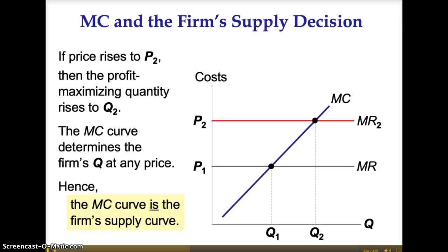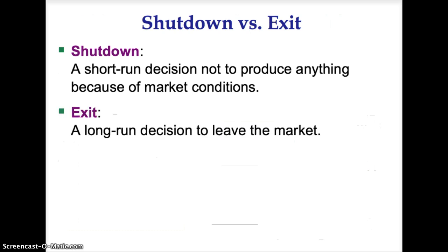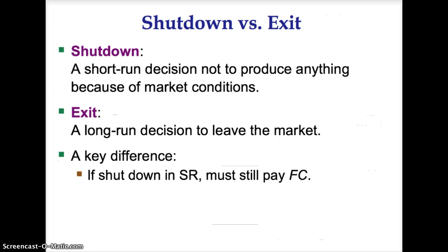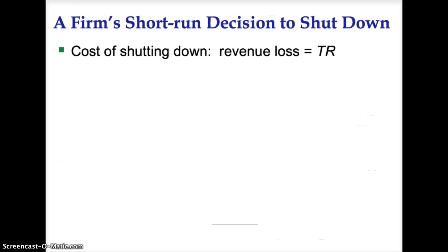The marginal cost curve is the firm's supply curve. There are times when a firm is not making profits but losses. The firm must decide whether to temporarily shut down or exit the market completely. Shutdown is a short-run decision not to produce anything because of market conditions. Exit is a long-run decision to leave the market. The key difference is that if the firm shuts down in the short run, they still have to pay fixed costs. If the firm exits the market in the long run, there are zero costs. In order to decide whether to shut down, the firm must analyze the costs and benefits.